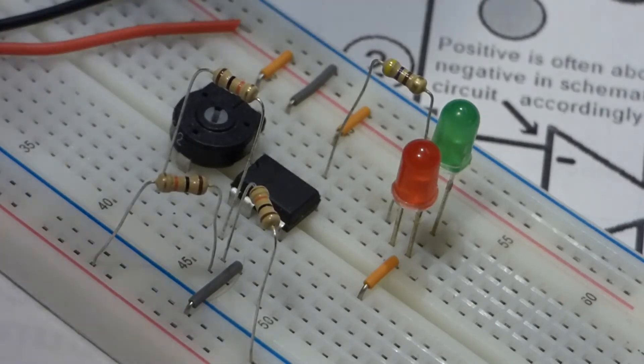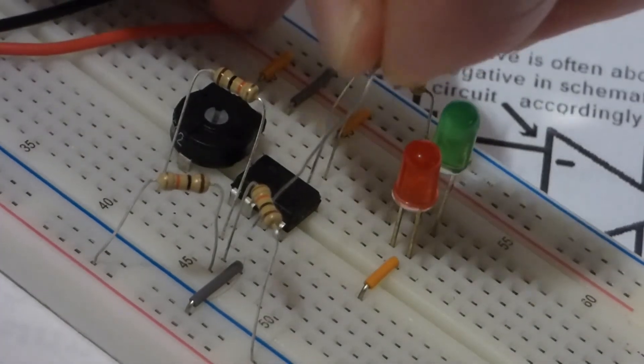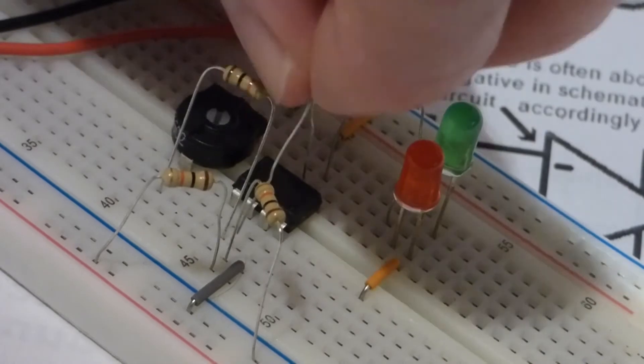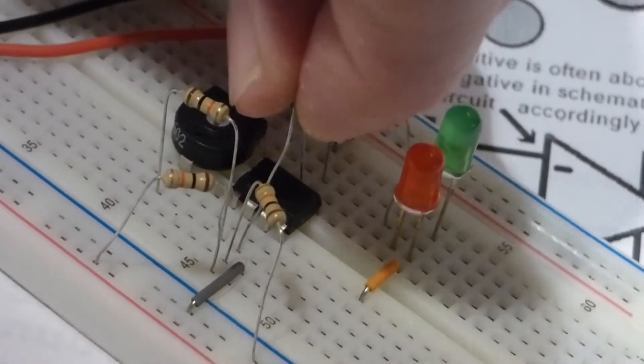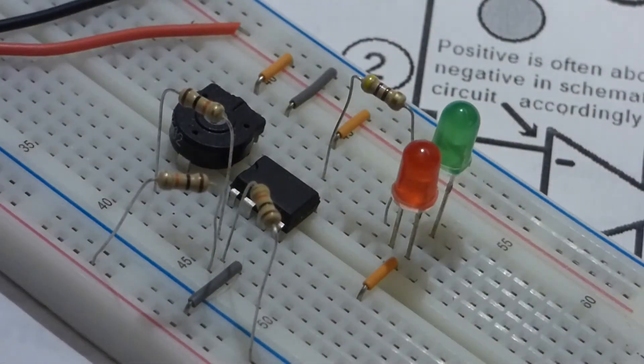So what we're going to do is we're going to use feedback. I haven't really covered this in videos, but all we're going to do is take the output, and again this is a 10k ohm resistor.